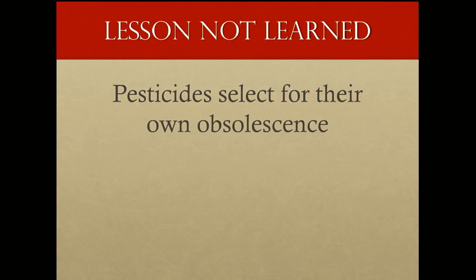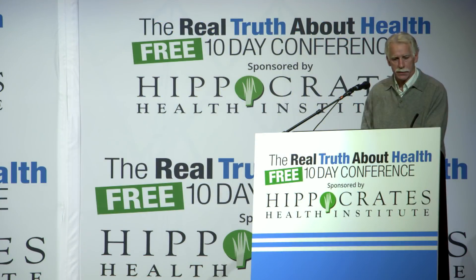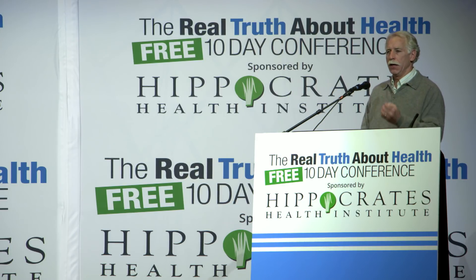With an accurate understanding of evolutionary biology, the most important lesson was this: chemicals select for their own obsolescence. Each and every toxin will locate every mutation for resistance and it will offer that mutation unlimited success.